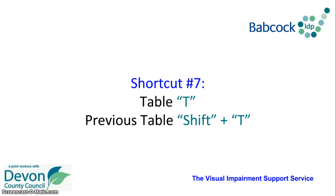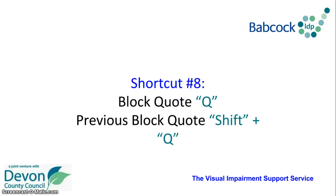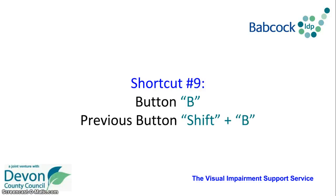To go to the next table you press T, and to go to the previous table you press Shift and T. To go to the next block quote you press Shift and B, and to go to the next block quote you press Shift and Q. To go to the next button you press B, and to go to the previous button you press Shift and B.